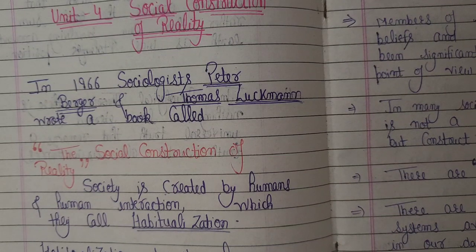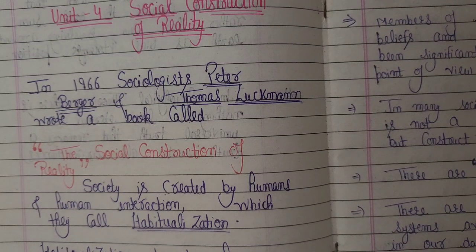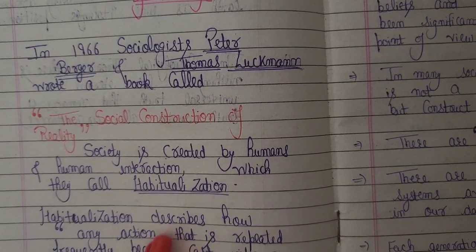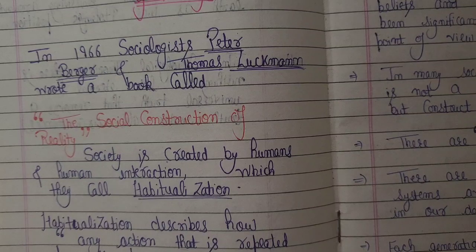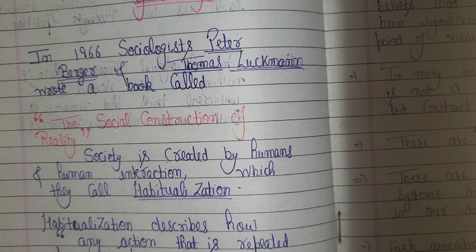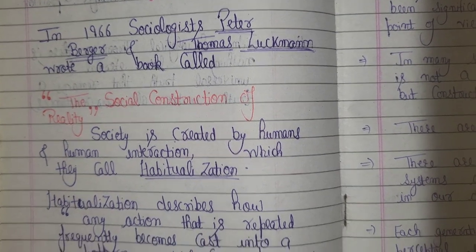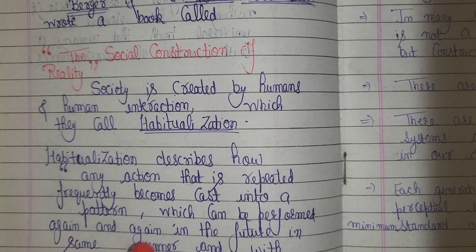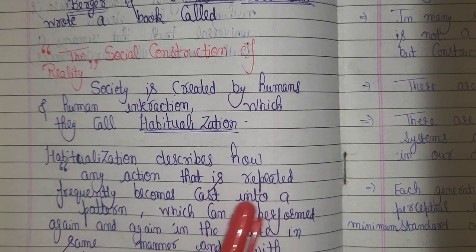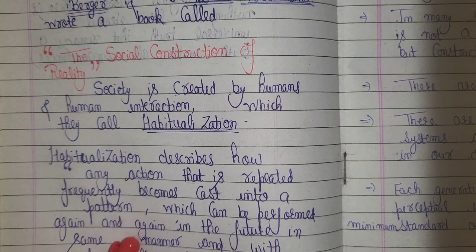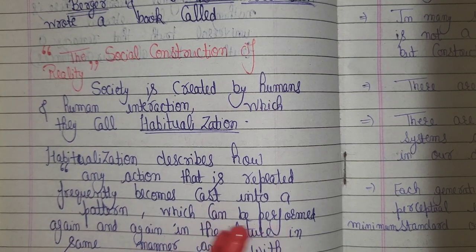What kind of things are being constructed? At the social level, what does it mean? Society is created by humans and human interaction, which Berger and Luckmann called Habitualization. What does habitualization mean?